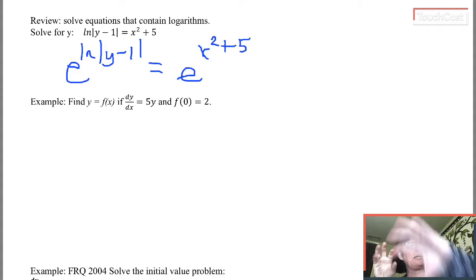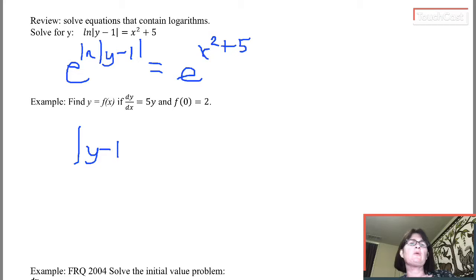So a base of e and a natural log undo each other. So what I have left over on the left-hand side is the absolute value of y minus 1 equals e to the x squared plus 5. And now my next job is to, I'm still working on isolating y, but y is inside absolute value bars.